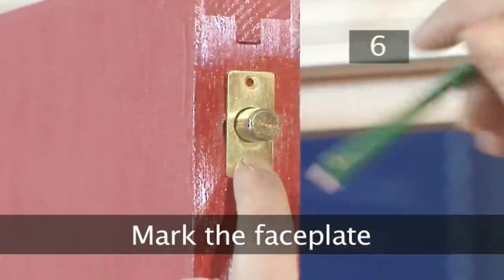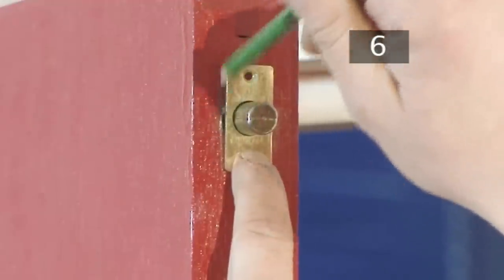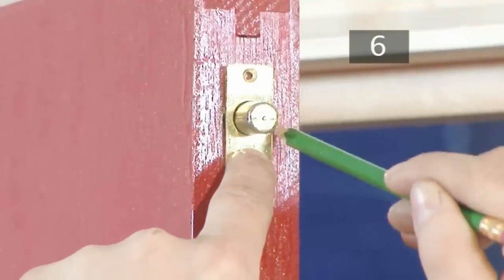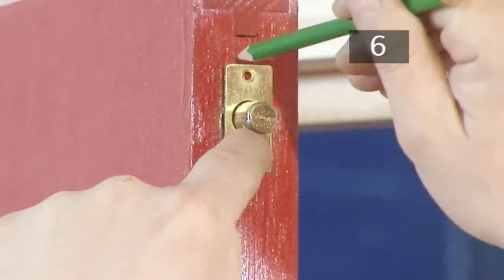Step 6. Mark the faceplate. Push the bolt into your newly drilled hole. Hold it steady and use your pencil to draw all the way around the faceplate. You will need this outline in order to chisel out a shallow recess with the bolt.